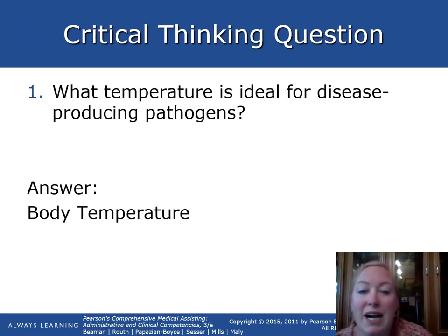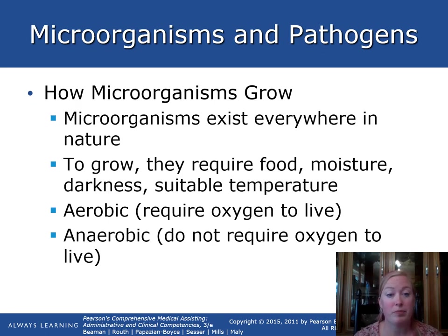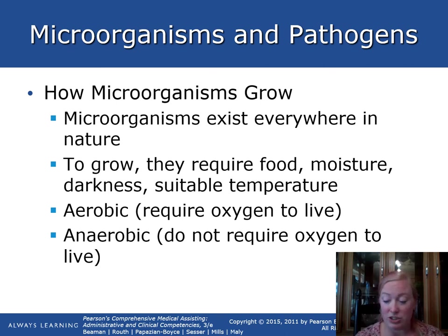The ideal temperature for disease-producing pathogens is body temperature. To grow, microorganisms require food, moisture, darkness, and a suitable temperature. There are two types: aerobic microorganisms, which require oxygen to live, and anaerobic microorganisms, which do not require oxygen at all.